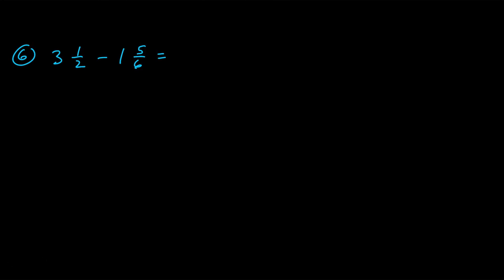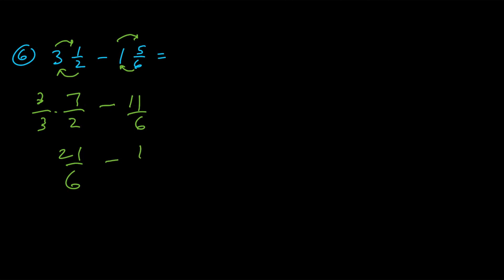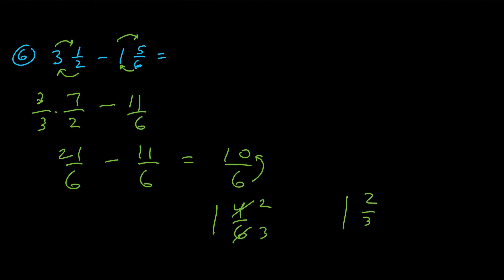For number six we have a subtraction problem with two mixed numbers. Converting to improper fractions: two times three is six plus one is seven, so seven halves; six times one is six plus five is eleven, so eleven sixths. The common denominator of two and six is six, so multiply the first fraction by three over three to get twenty-one sixths minus eleven sixths equals ten sixths. Six goes into ten once with four left over, and four sixths reduces to two thirds, so the final answer is one and two thirds.